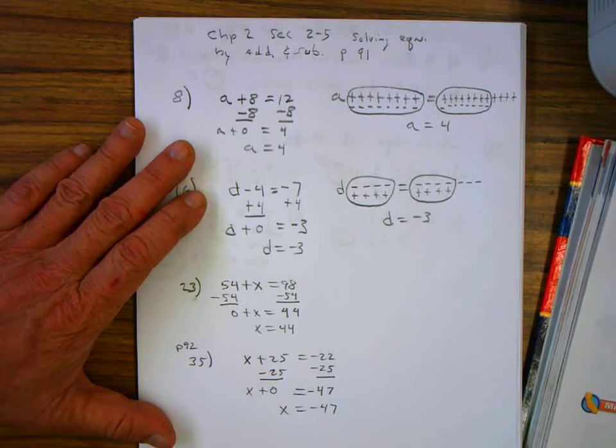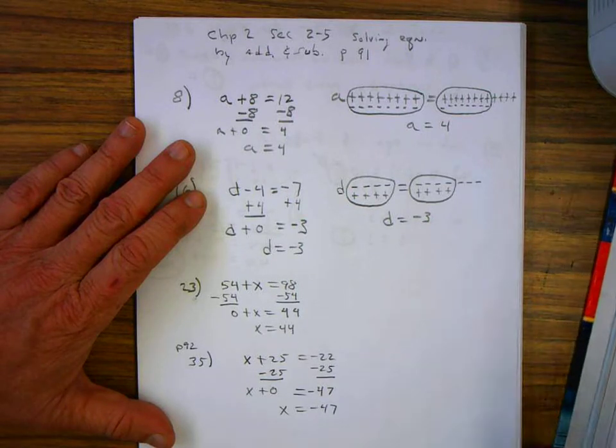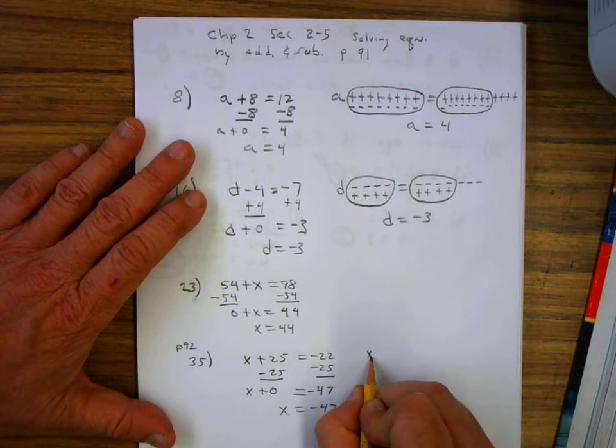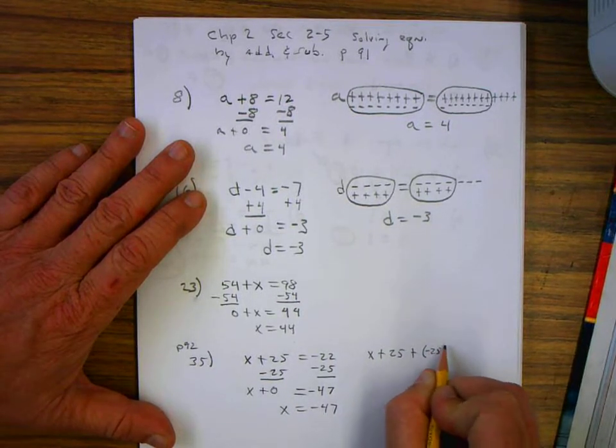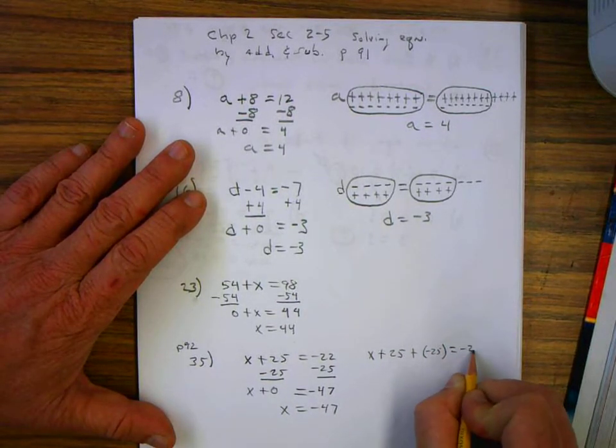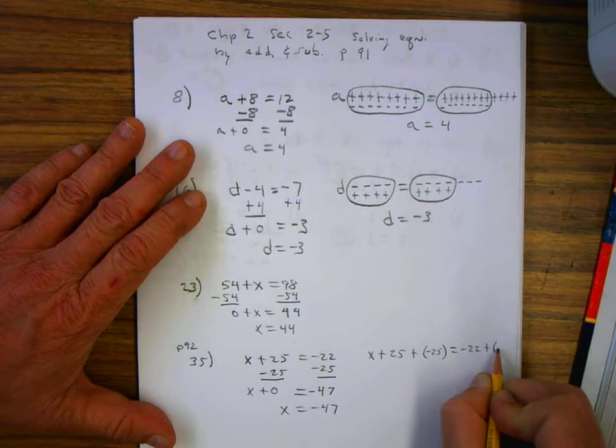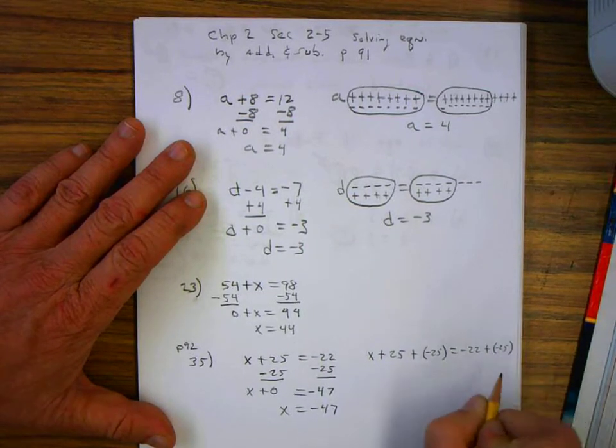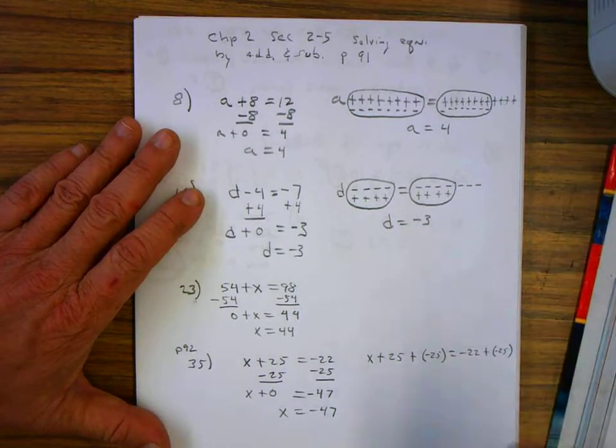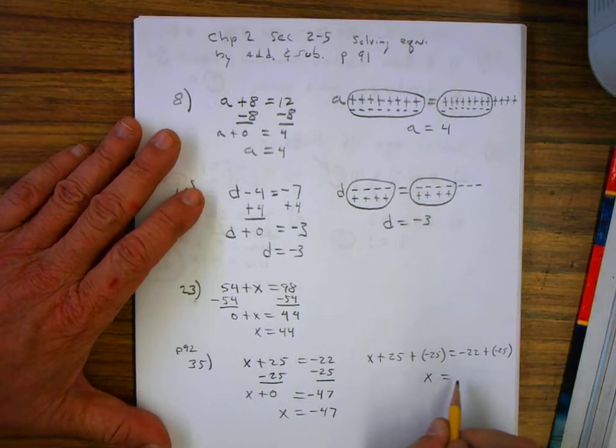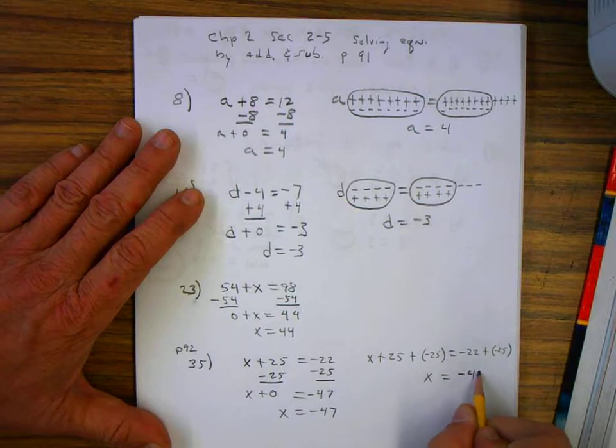Another student added negative 25 to each side. So this would be x plus 25 plus a negative 25 equals negative 22 plus a negative 25. It's effectively the same thing, so you get the same answer. These two cancel each other. x is equal to negative 47.